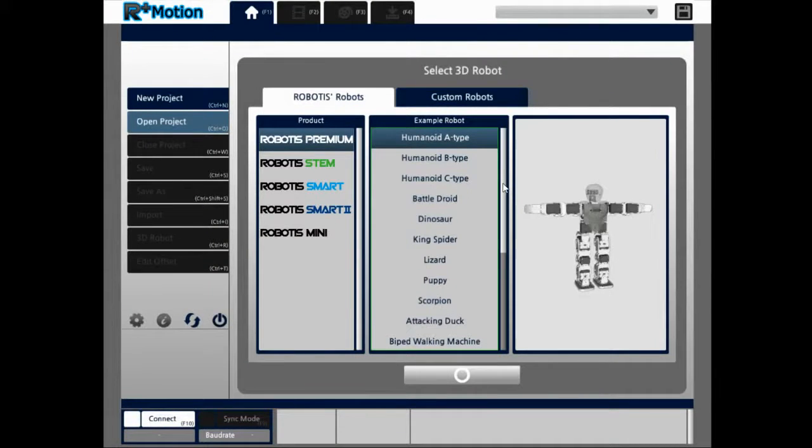Alright everyone, so this is R-plus Motion, this is our 3D choreographing tool that I mentioned earlier. What we want to do first is make sure that the controller is on and set to manage mode, which is the green LED on the controller.